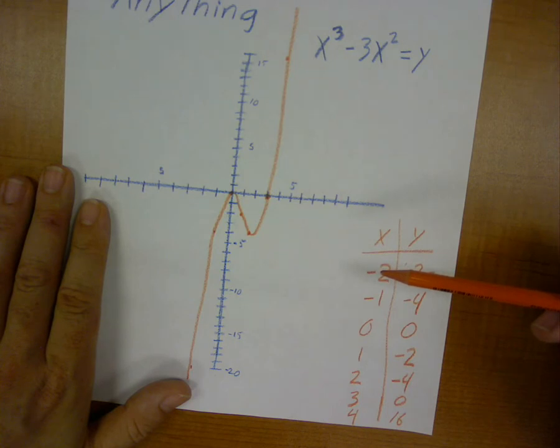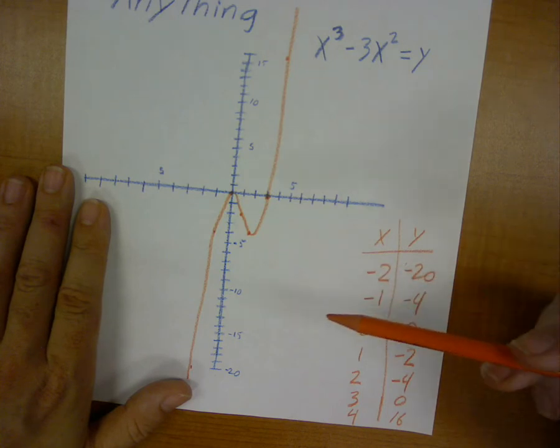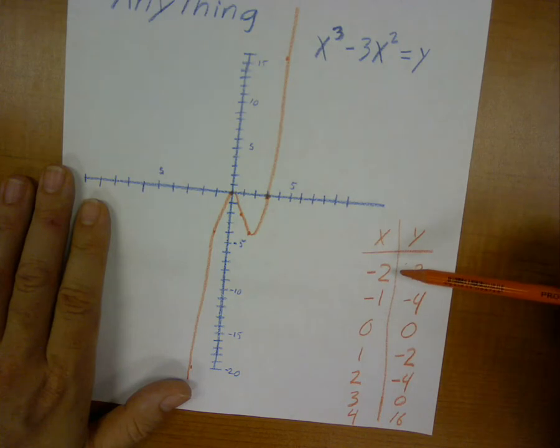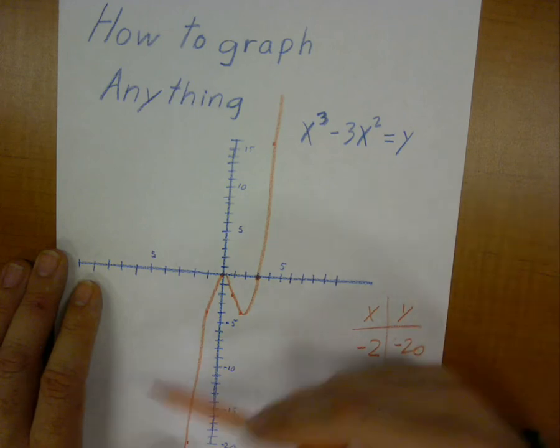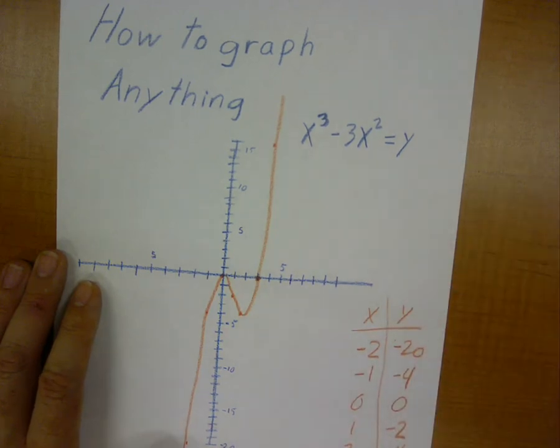I don't care what bizarro equation you're dealing with. That's how we do it. And so, you can graph anything you ever need to using this method. Don't be afraid to get your hands just a little dirty. Plot out a couple numbers. Draw them out. Connect the dots. Anybody can do it. Because anybody can connect the dots.